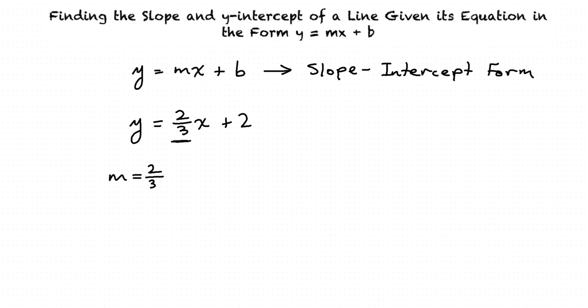The y-intercept is found by looking at the b-value of the function, which is two in this case. Therefore, the y-intercept is at (0,2). Okay, I understand. How can I make sure that those answers are right though?